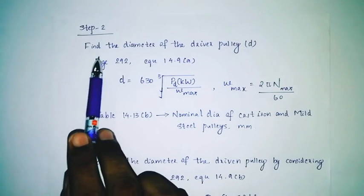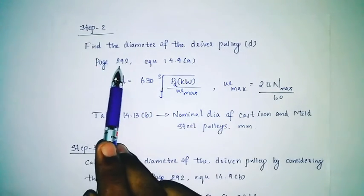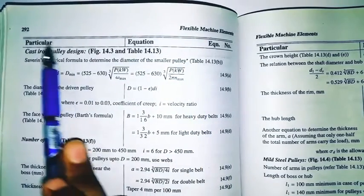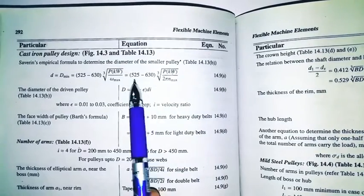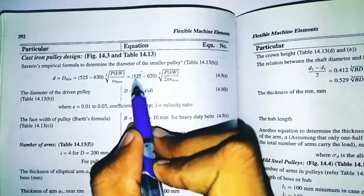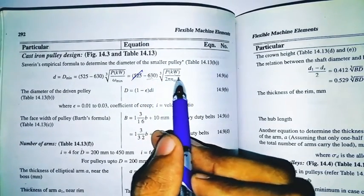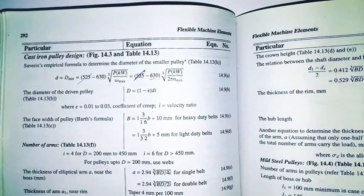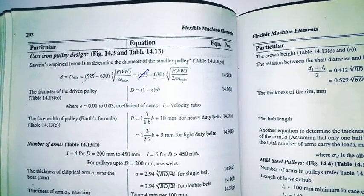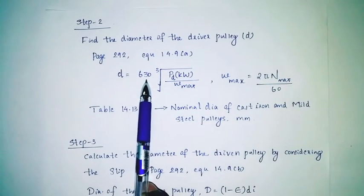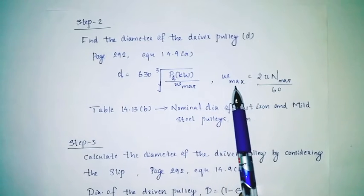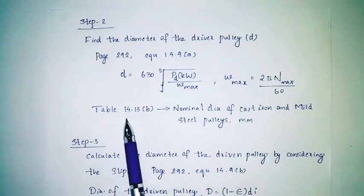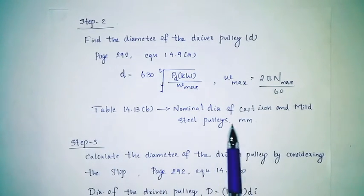Step 2: find the diameter of the driver pulley, small d. Page number 219, equation 14.9a. d is equal to 630 times the cube root of pd divided by omega max. Omega max is equal to 2π n_max divided by 60. This is the nominal diameter for cast iron and mild steel pulley.